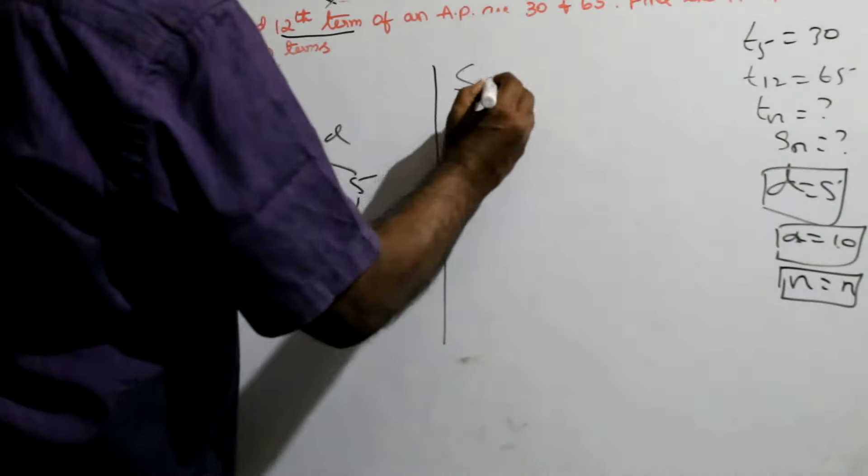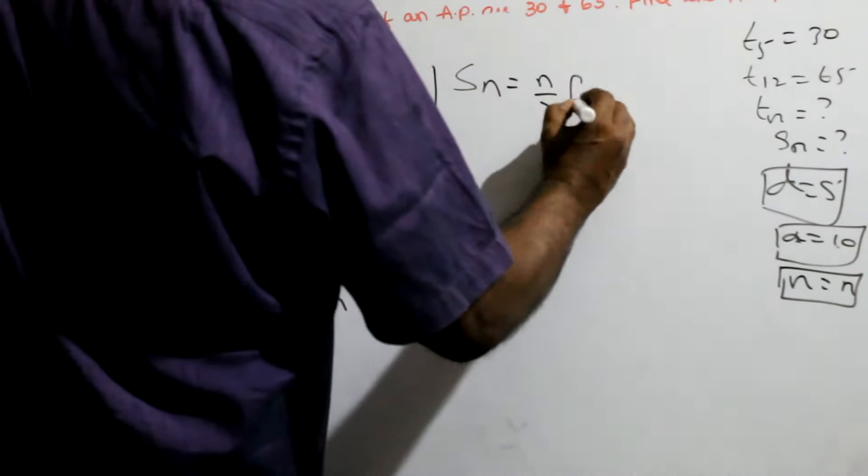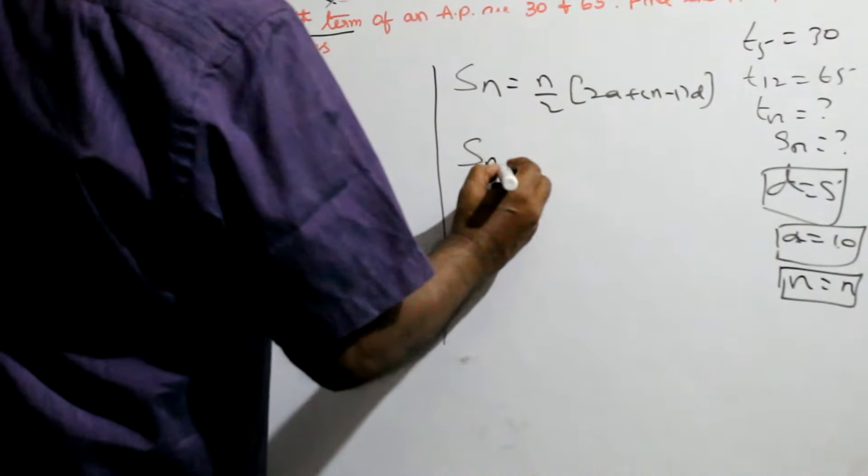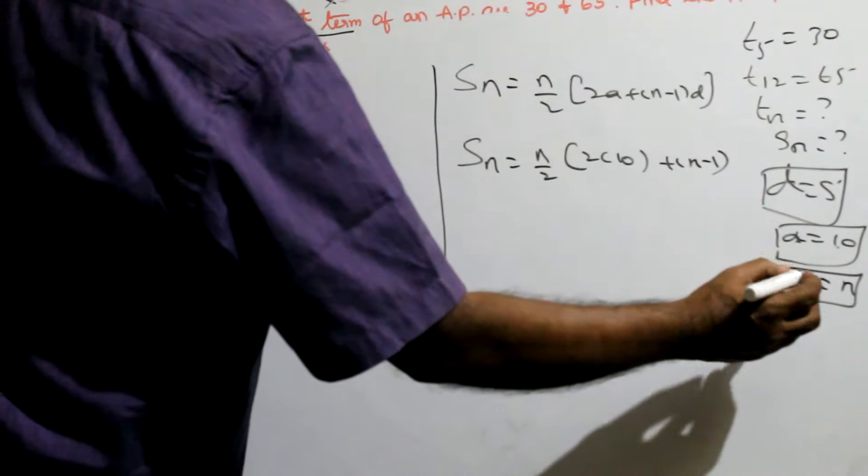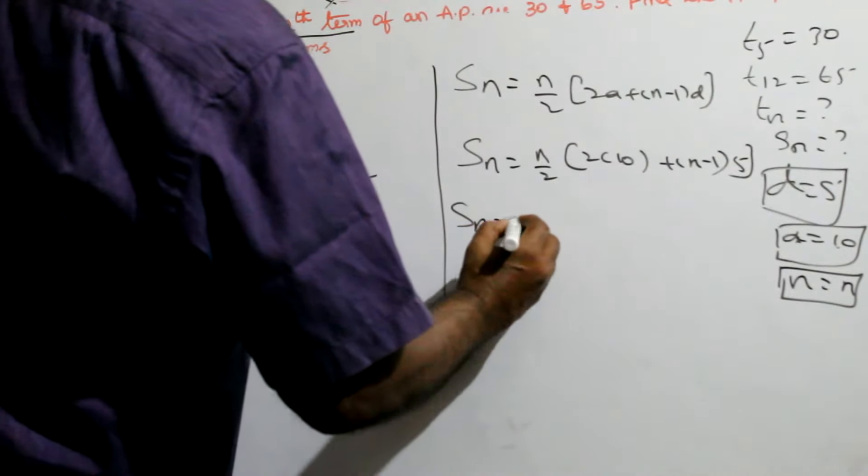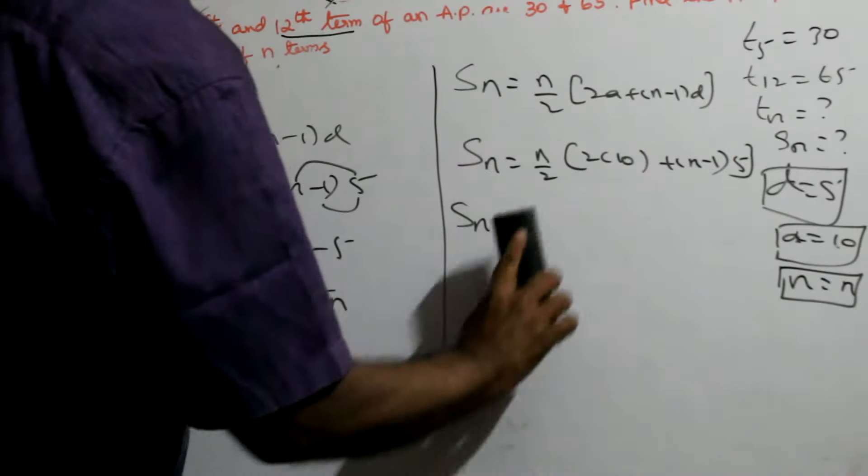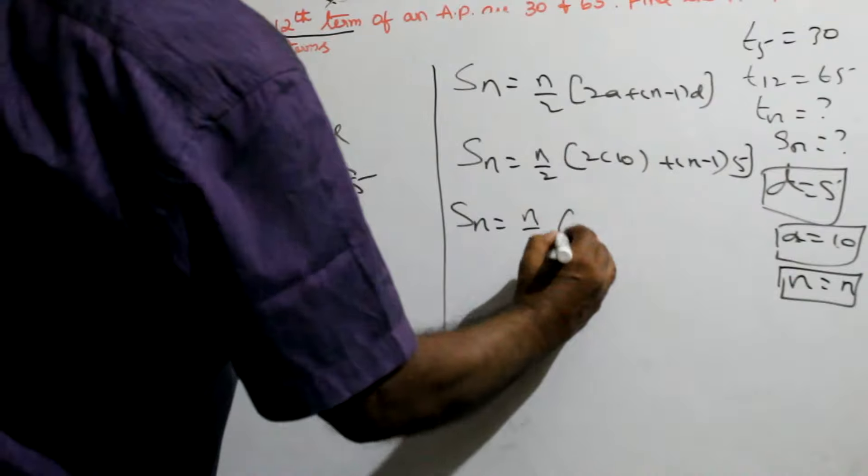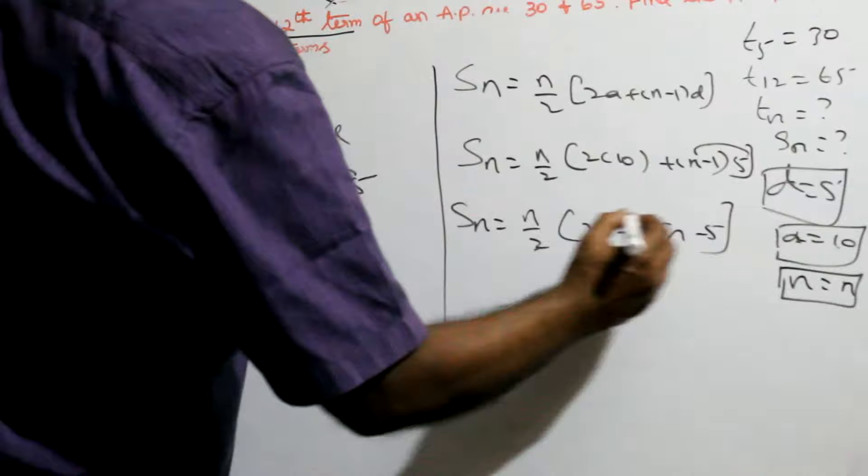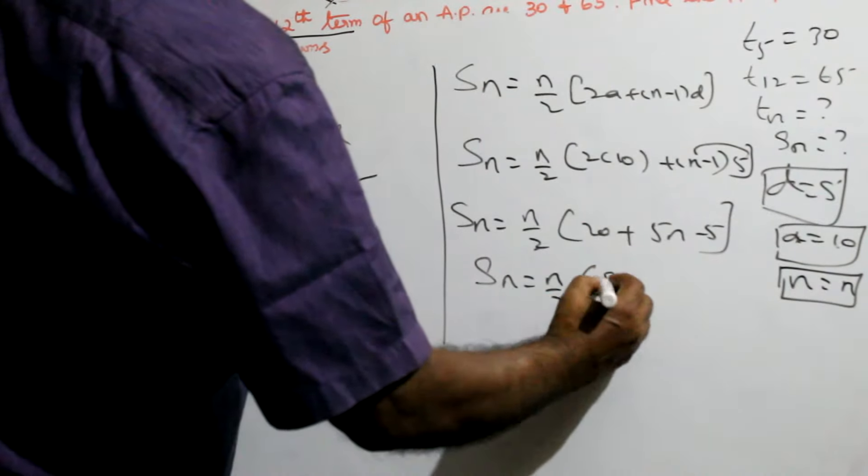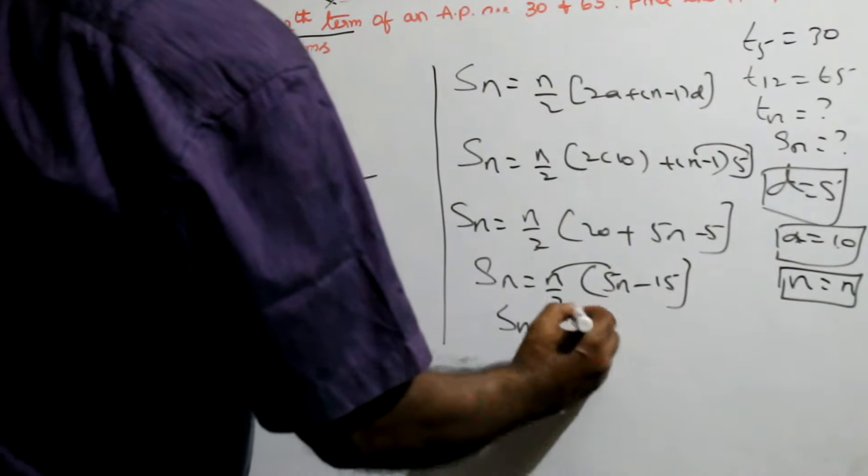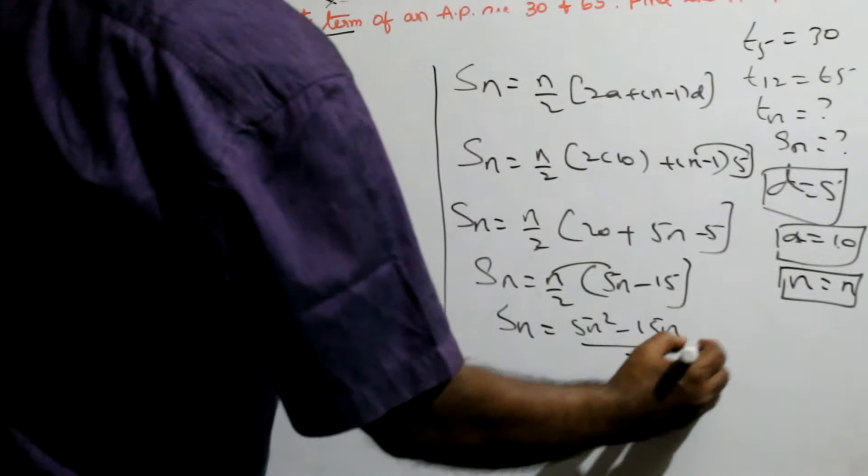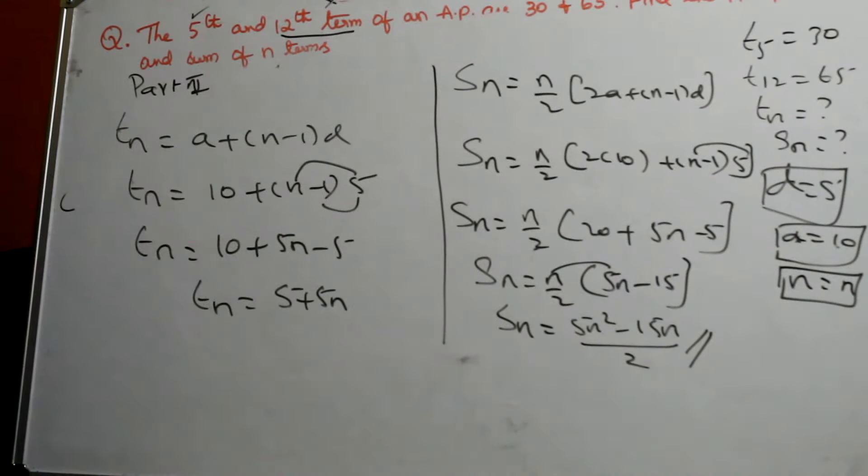So Tn is equal to 10 plus 5 into n is nothing but 5n minus 5. So Tn is equal to 10 minus 5 is 5, 5 plus 5n. If you put n as 1 you get the first term, 10. If you put n as 2 you get the second term like that. This is Tn. They want also Sn. Sn formula you know already.